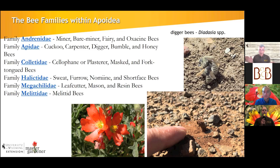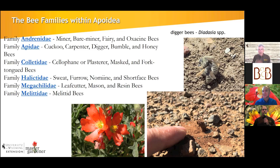Most bees in Wyoming nest in the ground rather than in trees. This is especially true in the grasslands — ground nesting is a safe place to be, particularly with prairie fires, and the bees are insulated from temperature extremes. An interesting thing: ground-nesting bees take signals from their environment. If you turn on the water and flood their hole, you haven't killed them but you've set them back. If it's cloudy in the morning, they won't go out to forage.